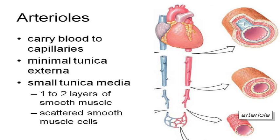The tunica media in the elastic and muscular arteries — those big arteries — can't adjust diameter as easily. It's the arterioles that have the most flexibility to dilate and constrict, and therefore they're called resistance vessels. They play the largest role in controlling blood pressure.